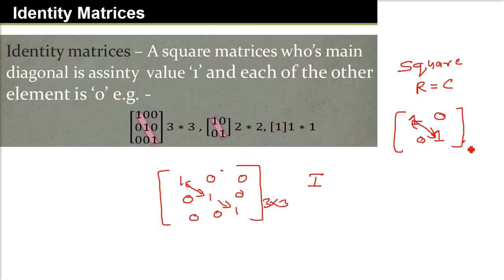So this is a 3×3 identity matrix. The previous one was 2×2 identity matrix. Just 1, this is a 1 by 1 identity matrix.